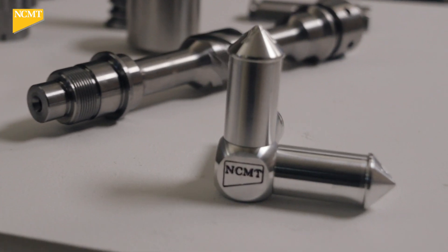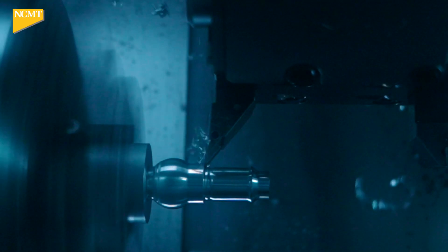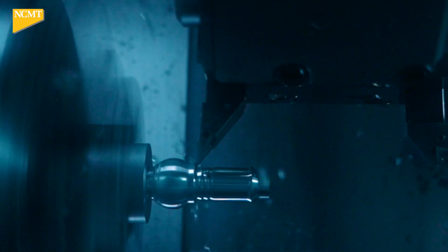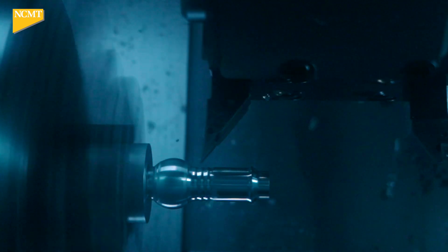We are making one end in the main spindle from a bar, passing it over to the subspindle after parting off, and then finishing on the subspindle.